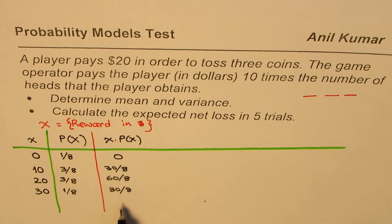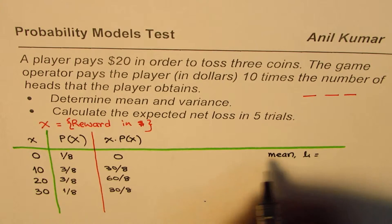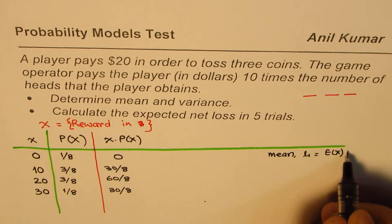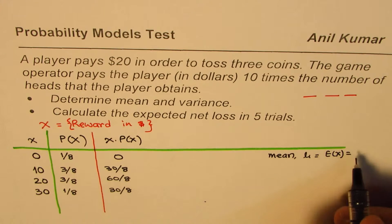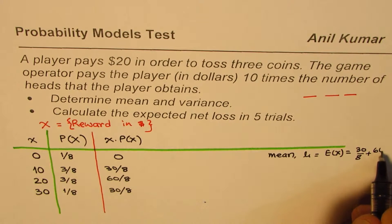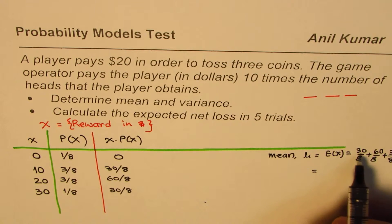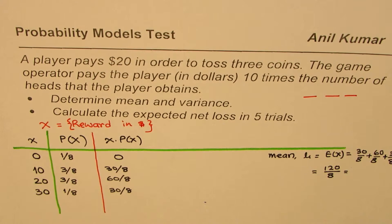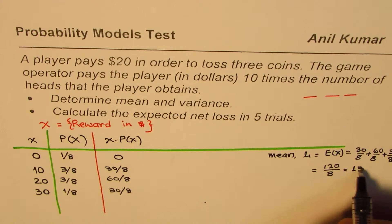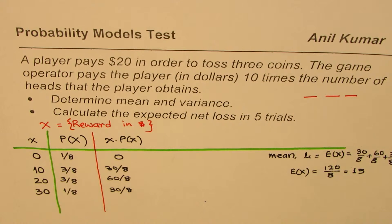Now, sum of all this will give you the expected value, or the mean. So mean here is, which equals to the expected value also. Sometimes we write this as expected value. So that is sum of all this, which is equal to 30 over 8 plus 60 over 8 plus 30 over 8. So that is the mean for us. So 30, 30, 60, 120 over 8. So that becomes the mean in this particular case. So 8 times 1, 40 means 15. So the mean here, or the expected value in this case is 15. So we got the first answer.